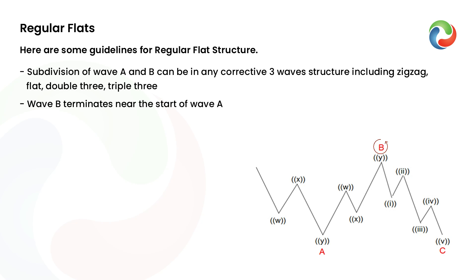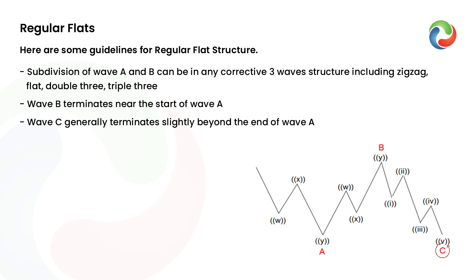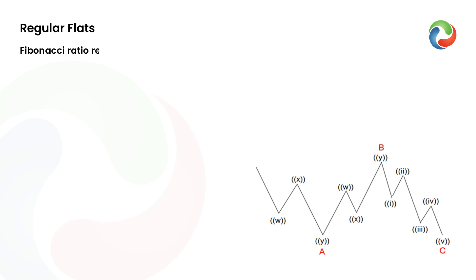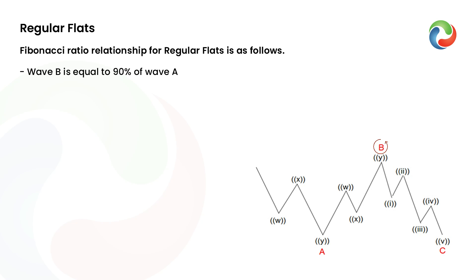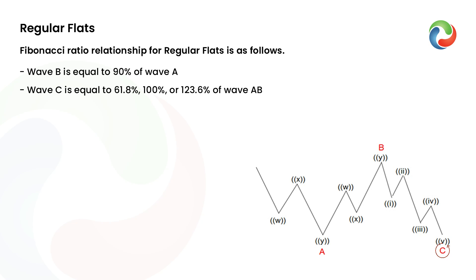Wave B terminates near the start of wave A. Wave C generally terminates slightly beyond the end of wave A. Wave C needs to have momentum divergence. The Fibonacci ratio relationship for regular flats is as follows: Wave B is equal to 90% of wave A. Wave C is equal to 61.8%, 100%, or 123.6% of wave AB.